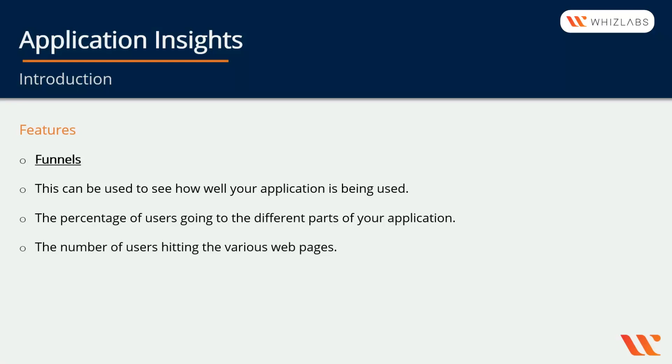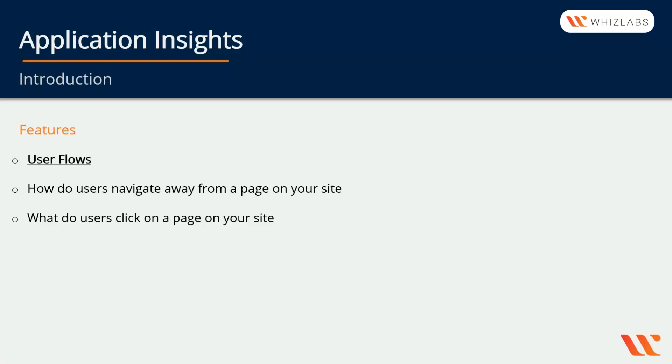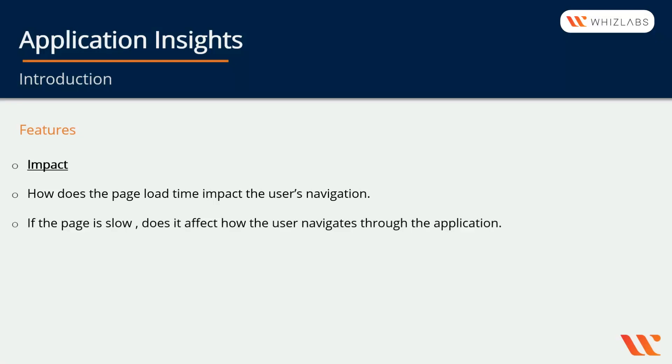You also have User Flows, which shows how users navigate away from pages on your site, what users click on a page, which specific part of the page they click, and whether there are places where users repeat the same action over and over. Next, you have Impact, which examines how page load time affects user navigation and whether a slow page affects how the user moves through the application.